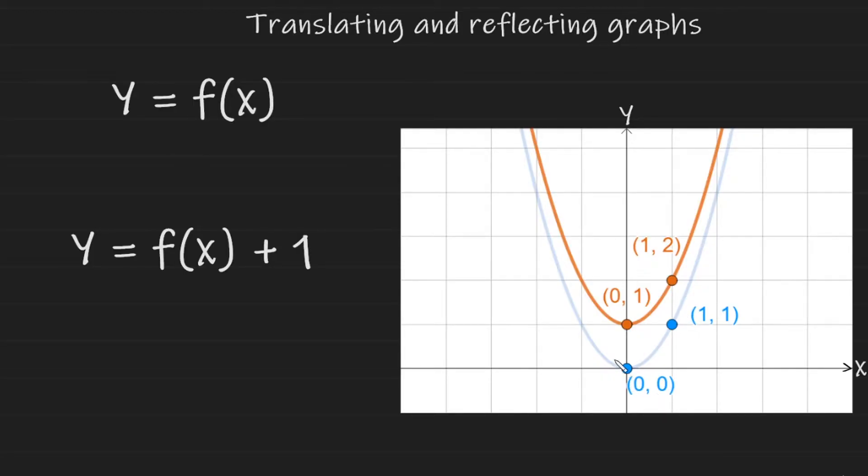This coordinate 0, 0, now becomes 0 and 1. The y value has changed by plus 1. And this coordinate here, 1 and 1, the y value has changed by plus 1 to become 2. However, the x values have remained unchanged.